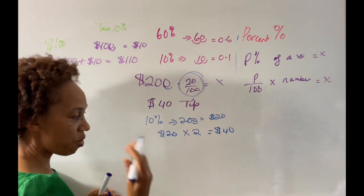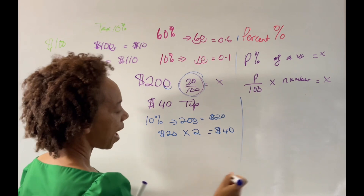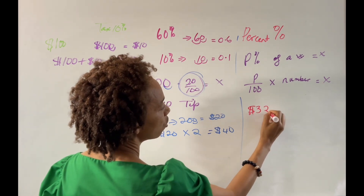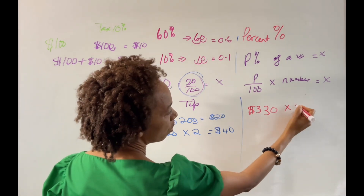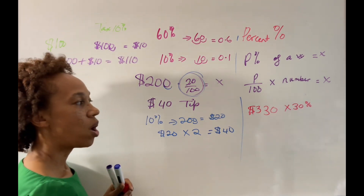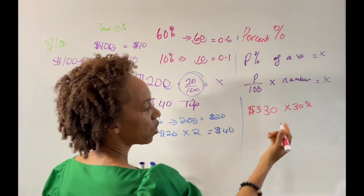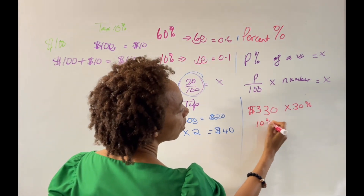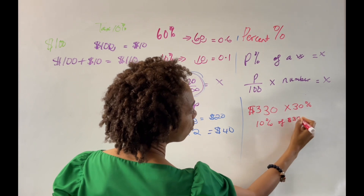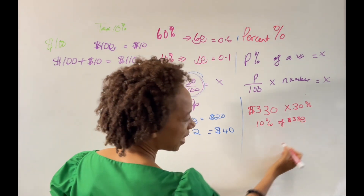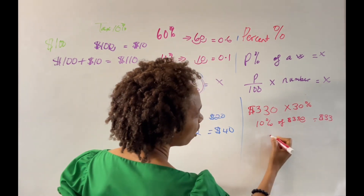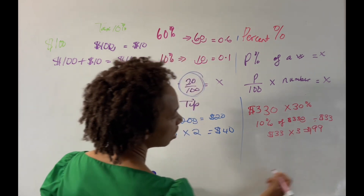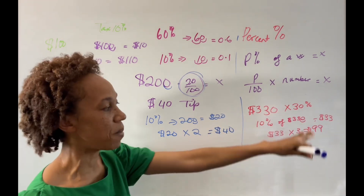Here's another example: your bill is $330 and you need to calculate 30%. First, find 10% of $330 by moving one decimal place over: that's $33. Then multiply $33 by 3 because you need 30%, which gives you $99. If you need 20%, multiply the 10% result by 2; for 30%, multiply by 3.